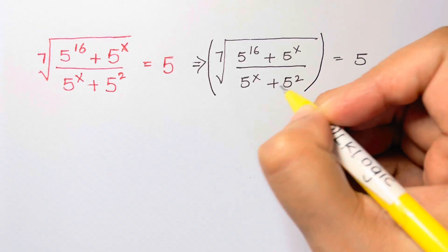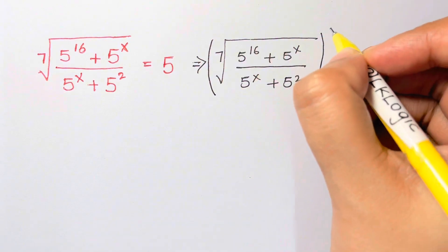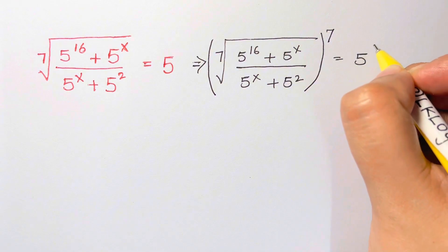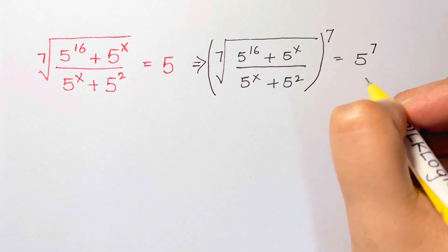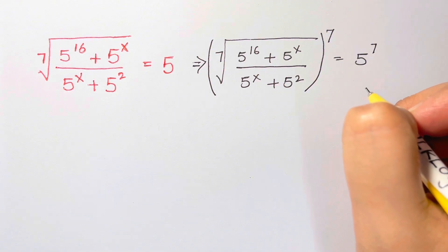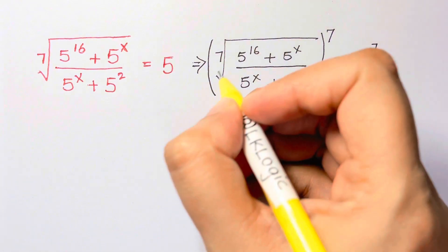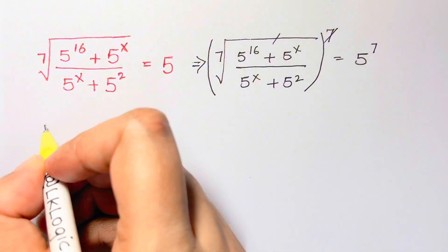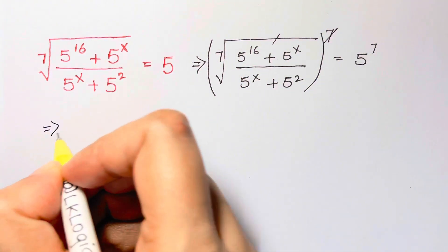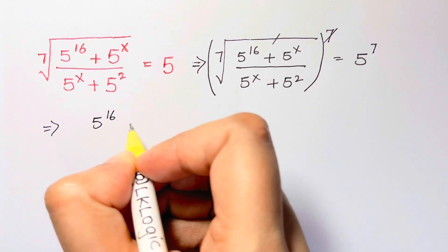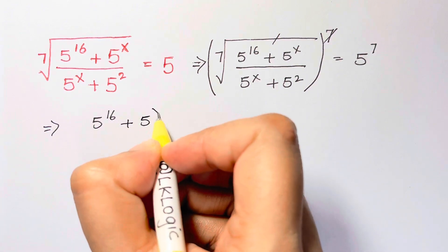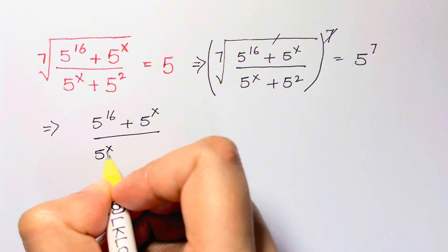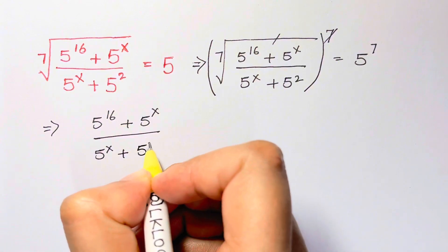Now to remove this root, I'm going to raise both sides to the power of 7. On the right side we also have 5 to the power of 7. I can cancel out the root and the power of 7, so I'm left with 5 to the 16 plus 5 to the x, over 5 to the x plus 5 squared.